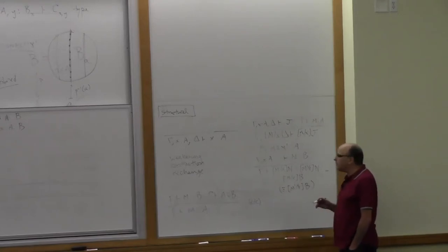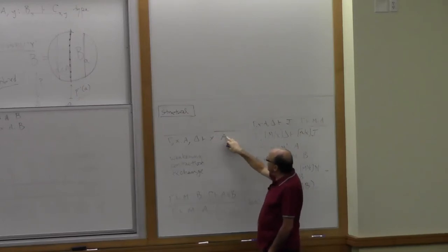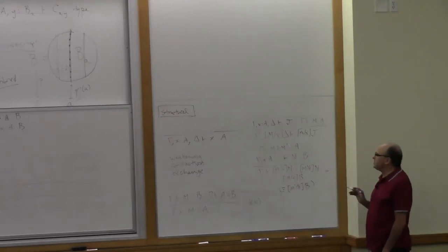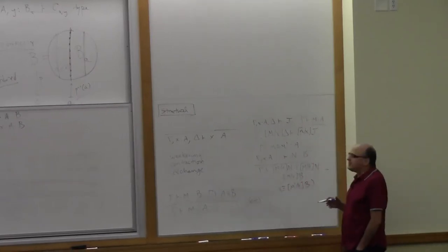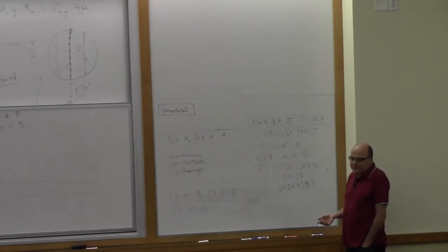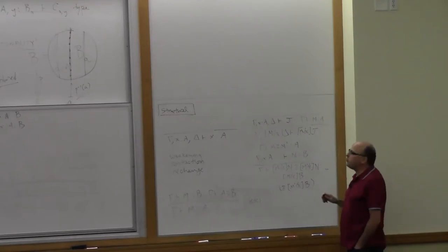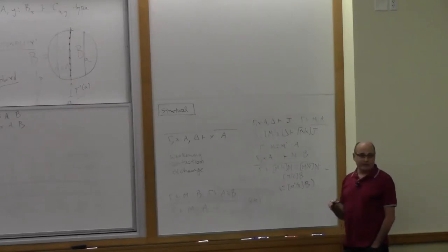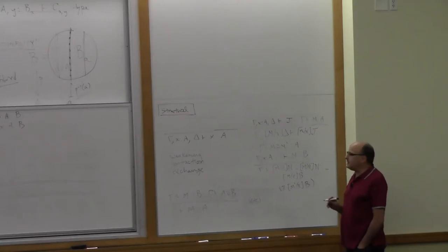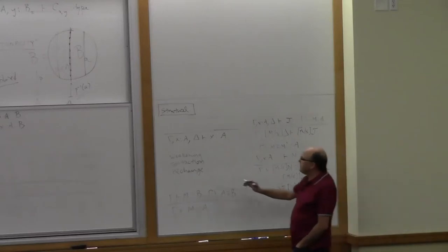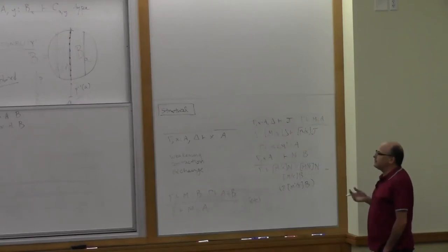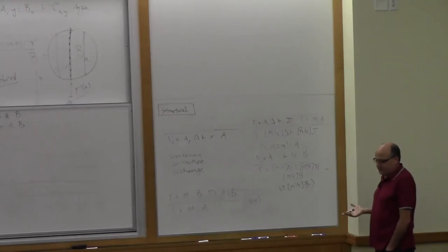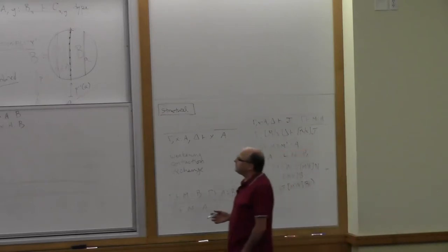There's another way of looking at this: a type is the range of significance of a variable. That goes back to Russell and Whitehead's work. Whenever you have a variable, you must implicitly or explicitly specify what it ranges over, and the thing it ranges over is called a type. In school, all variables ranged over the real numbers tacitly. Here, we're going to specifically state the range of significance of each variable. Whenever you have variables, you have to have types because they go together.